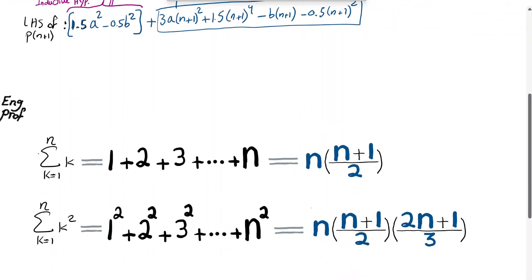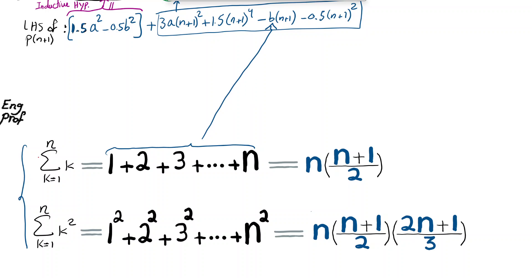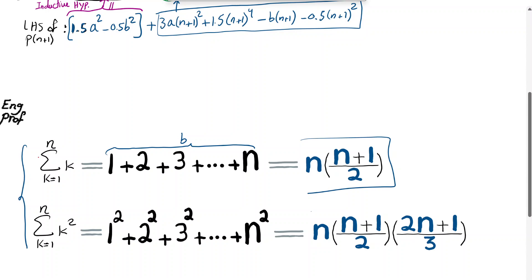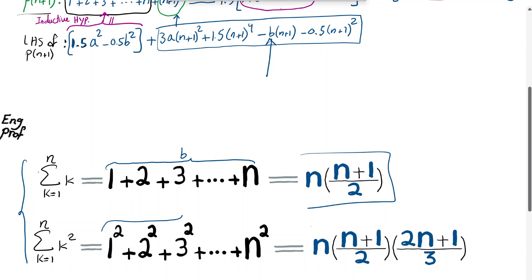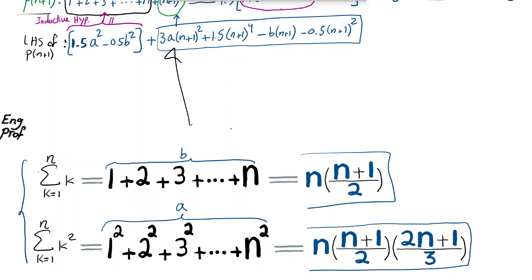To finish, I'll use two well-known formulas. The sum of consecutive integers B equals n(n+1)/2. The sum of squared integers A equals n(n+1)(2n+1)/6. I'll substitute these into the remaining terms.